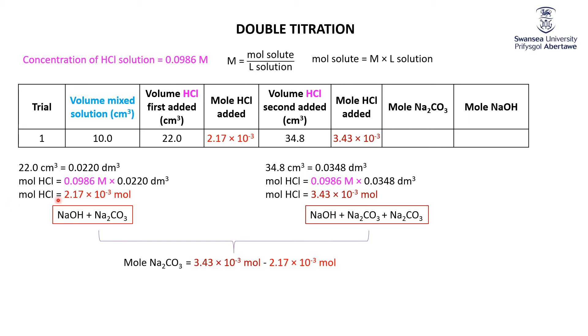So putting it all together, the moles of sodium carbonate is going to be the moles of sodium hydroxide and two sodium carbonates minus the moles of sodium hydroxide and the mole of sodium carbonate. So that's 1.26 times 10 to the minus 3 moles. And now using this number here, which is the sodium hydroxide plus the sodium carbonate, I can determine the moles of sodium hydroxide equals 9.3 times 10 to the minus 4 moles.